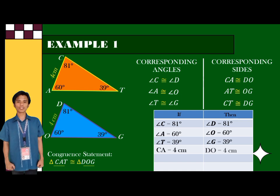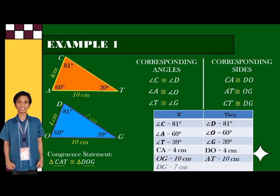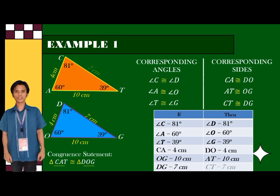And if the measure of angle T is 39 degrees, the measure of angle G is also 39 degrees.